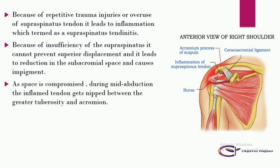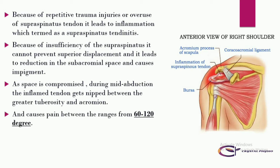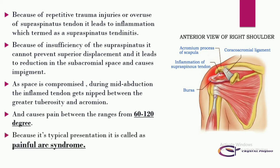As the subacromial space is compromised, during mid-abduction the impinged tendon gets pinched between the greater tuberosity and the acromion. It causes pain between the range of 60 to 120 degrees. Because of this typical presentation, it is called painful arc syndrome.